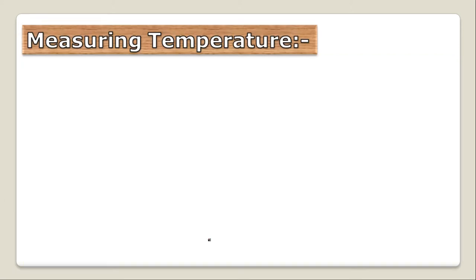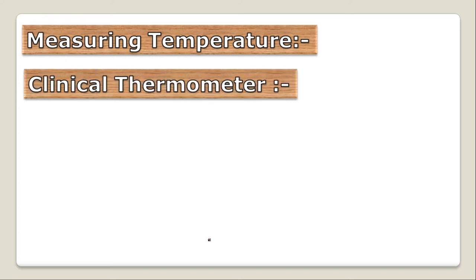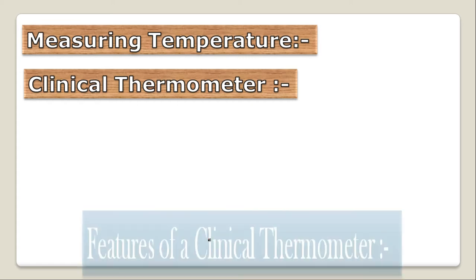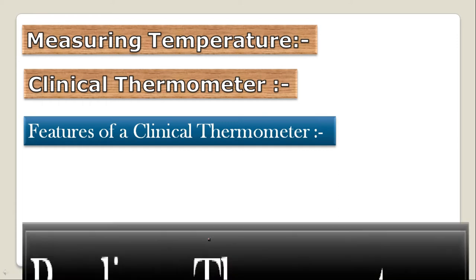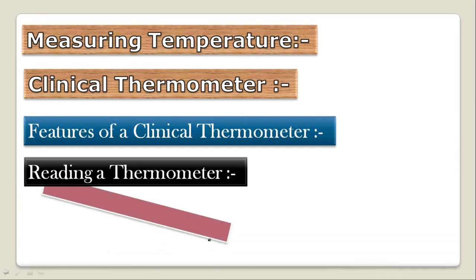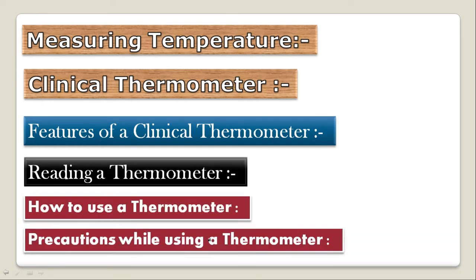In the previous lecture, we had seen about measuring temperature — that a substance used to measure temperature is known as a thermometer — and something about the clinical thermometer. We defined that a thermometer used to measure the temperature of the human body, or used by doctors to measure the temperature of their patient, is known as a clinical thermometer. We also covered features of the clinical thermometer, how to read it, how to use it, and precautions while using it.